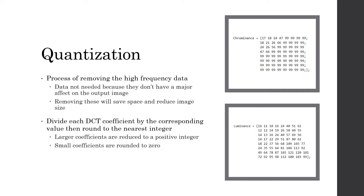As we saw in the DCT section, the larger coefficients produce more impact to the 8x8 block, while the smaller coefficients have little to no impact on the overall 8x8 block. Therefore, when quantized, the larger coefficients are reduced to a positive integer, while the smaller coefficients are rounded to zero.